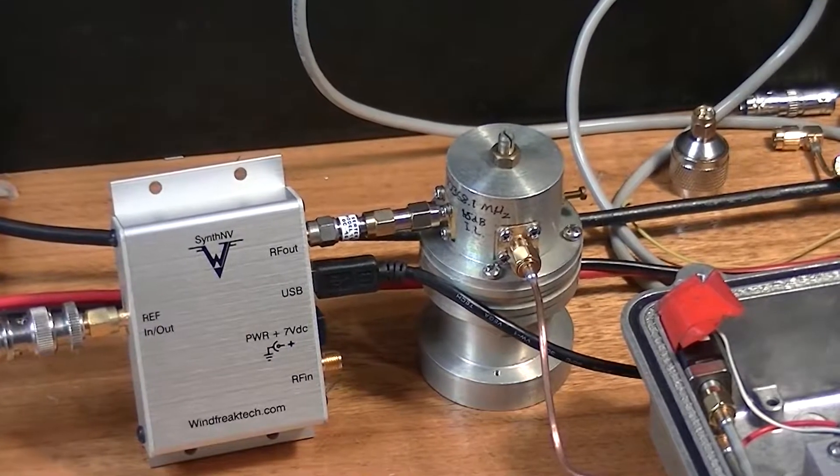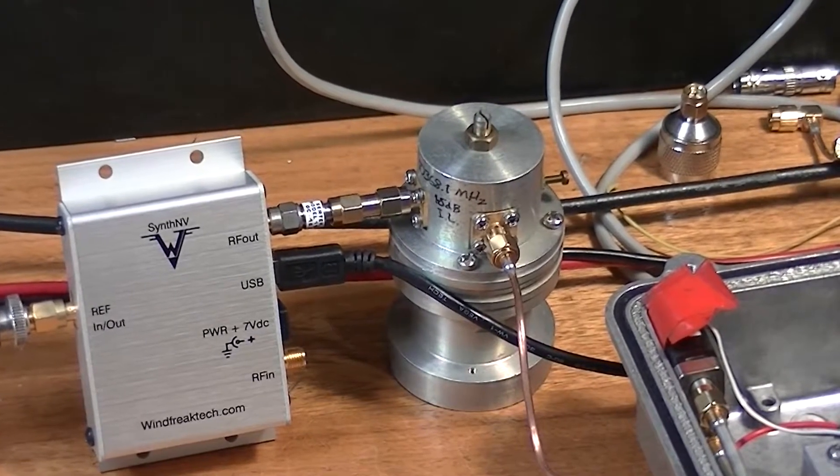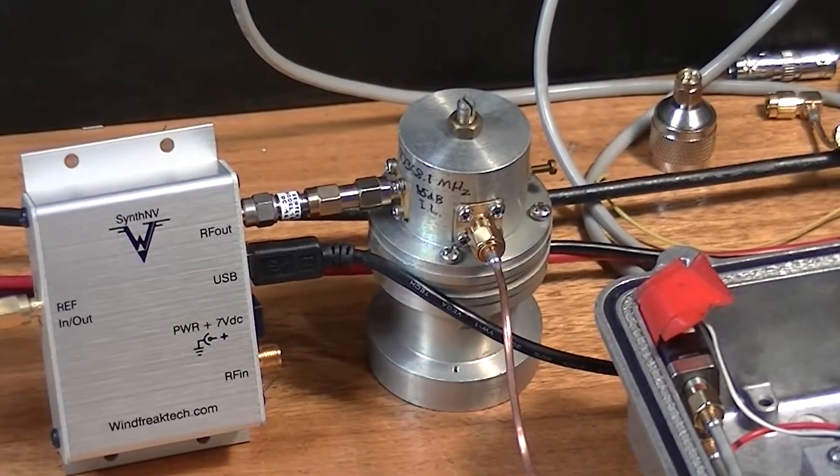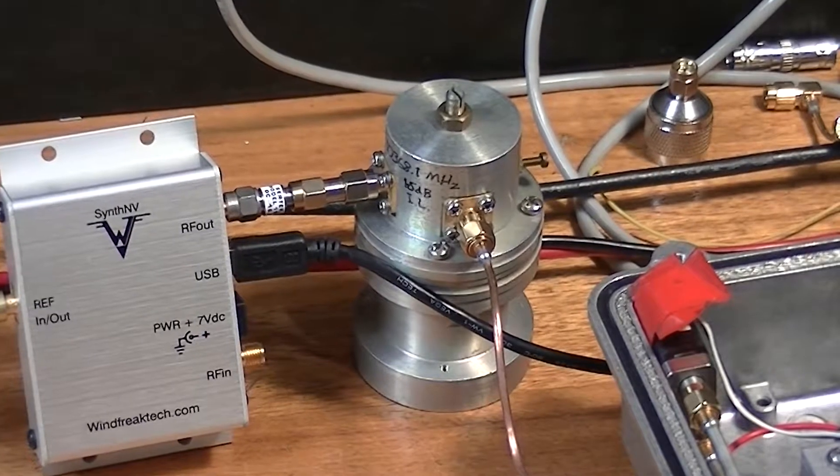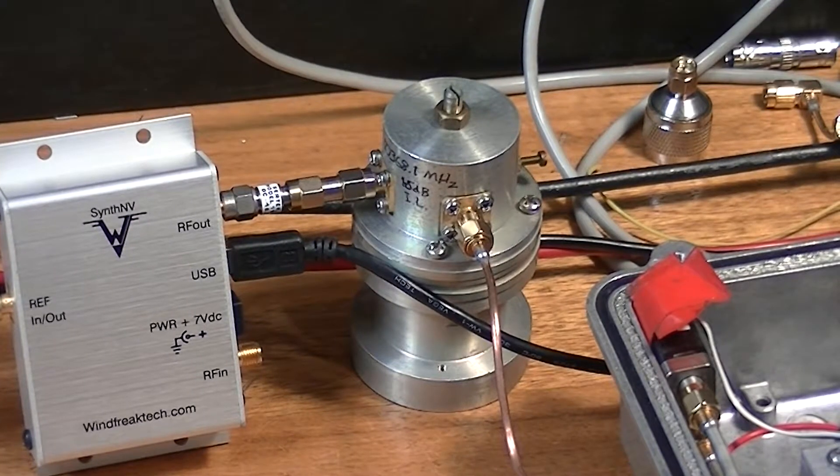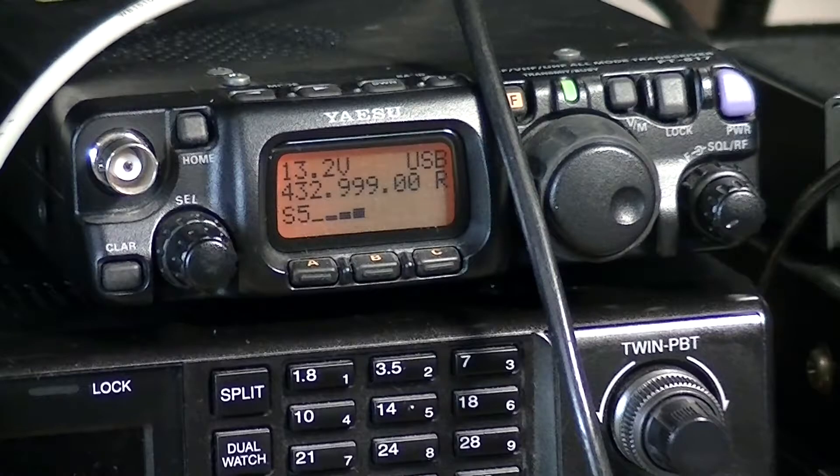It's going through a 10368 filter, so it's filtering quite severely the fundamental at 3456, so it doesn't upset the front end of the transverter system. And we're hearing that on the IF rig, which is an FT817, as you can see, using a 433 IF.